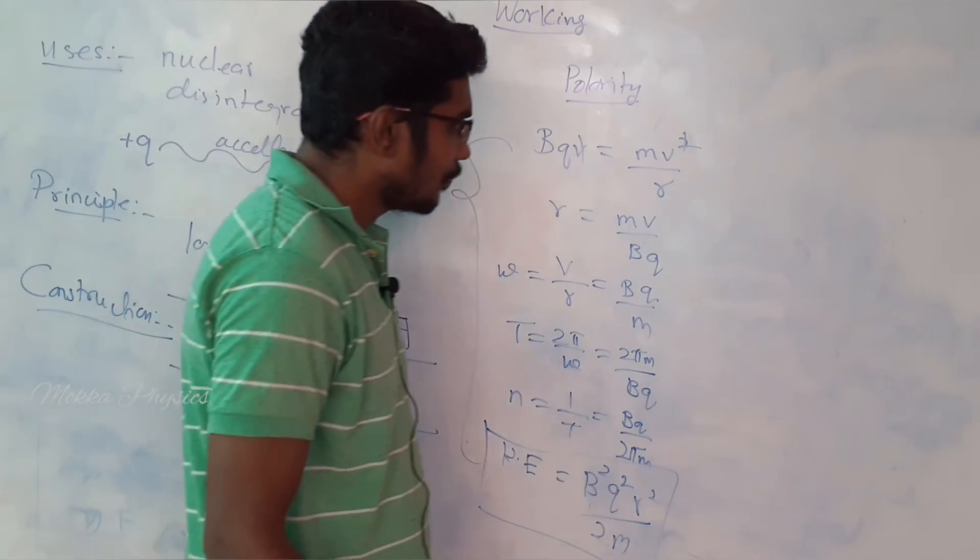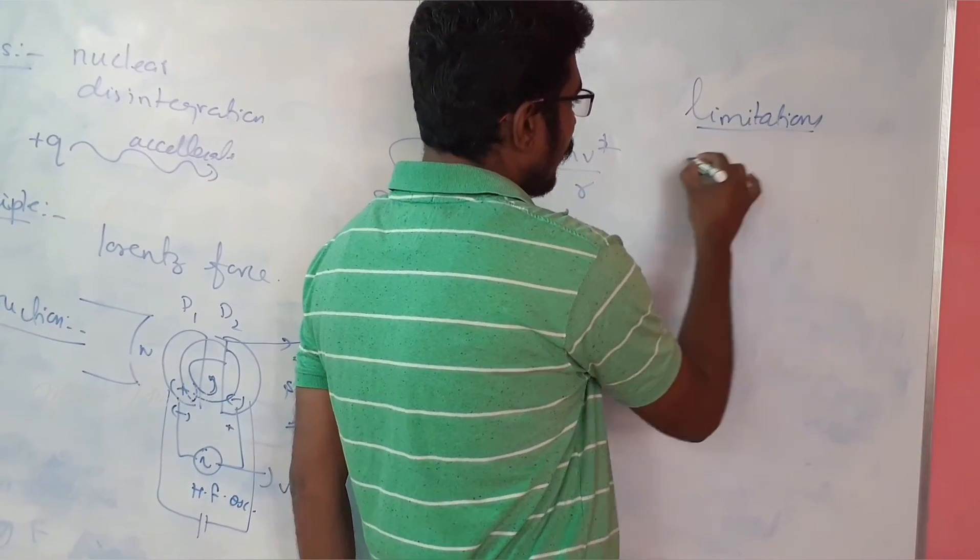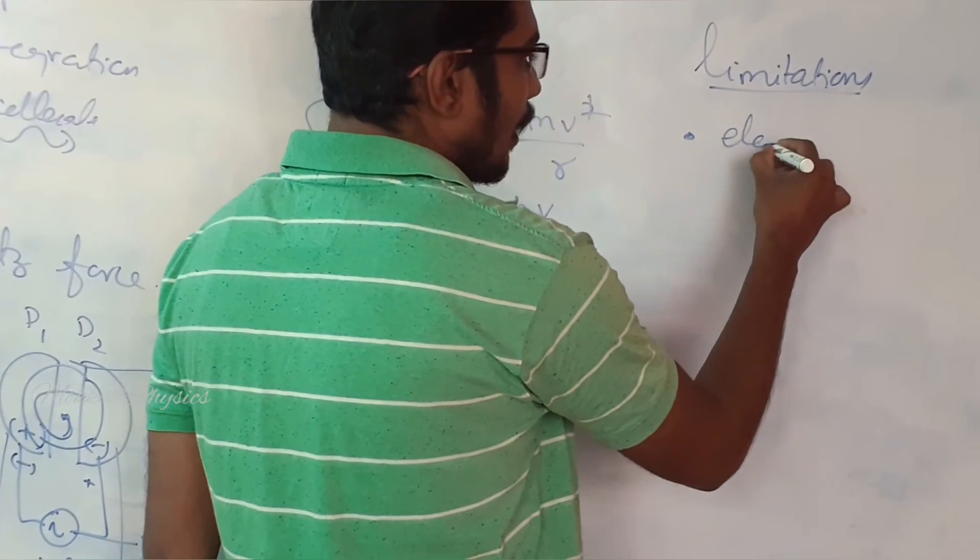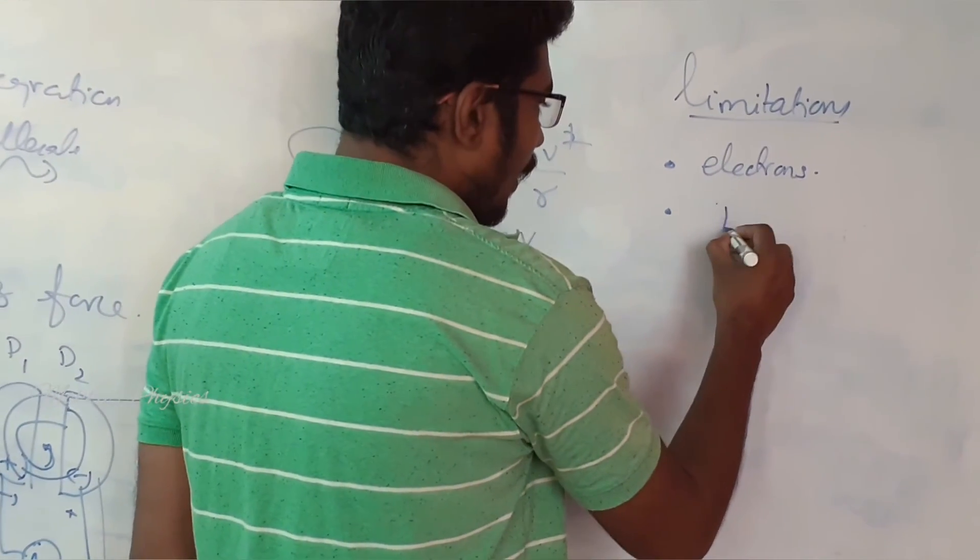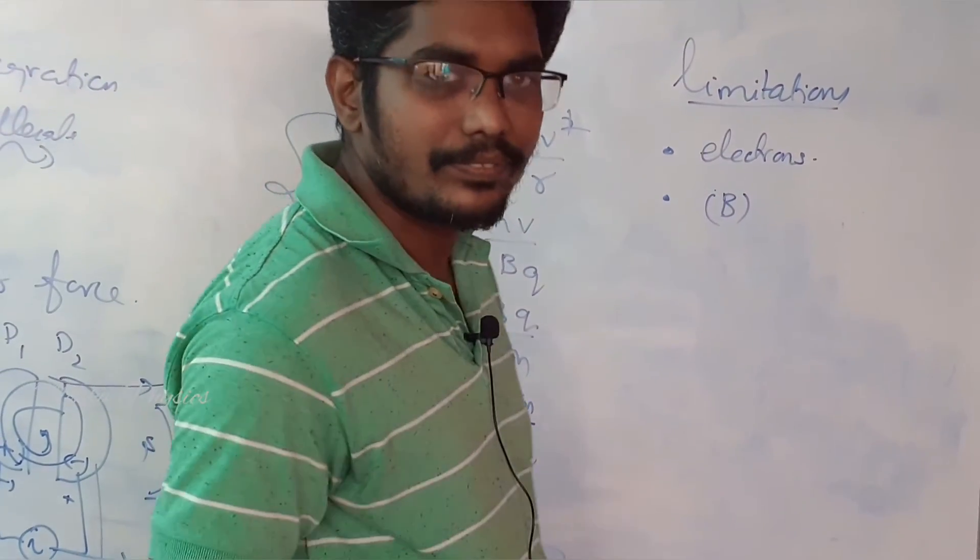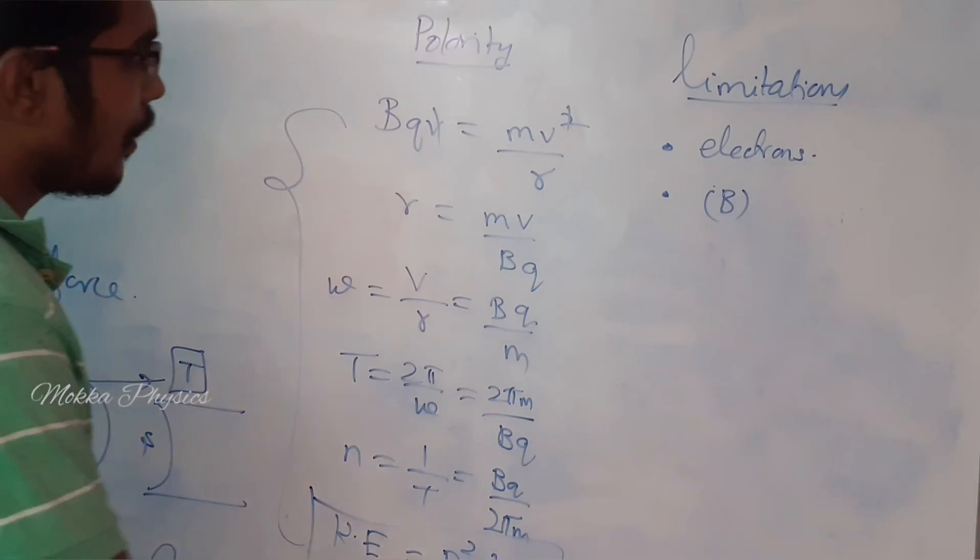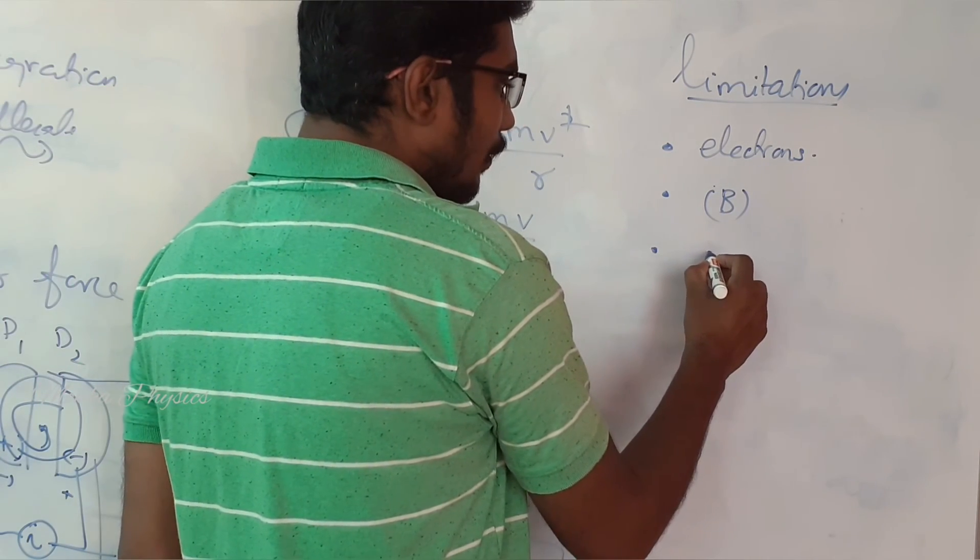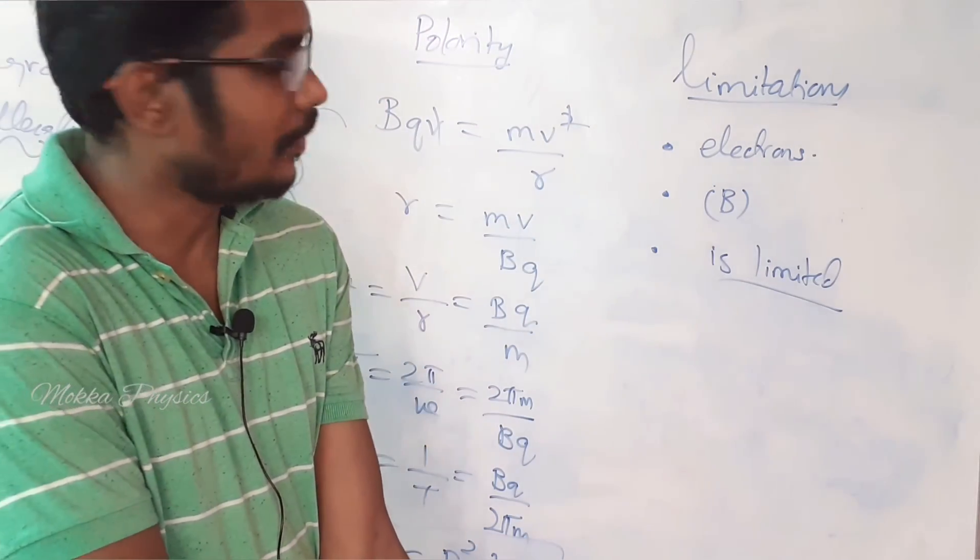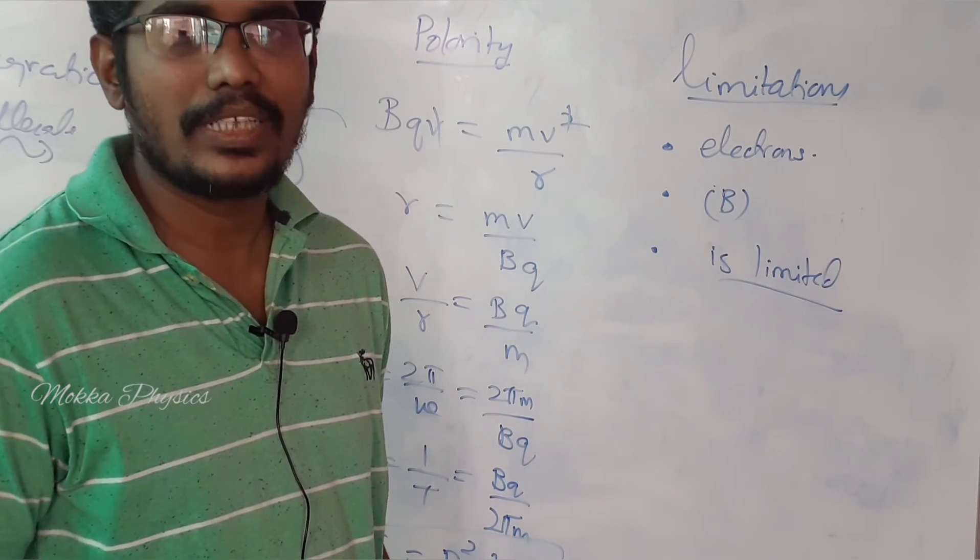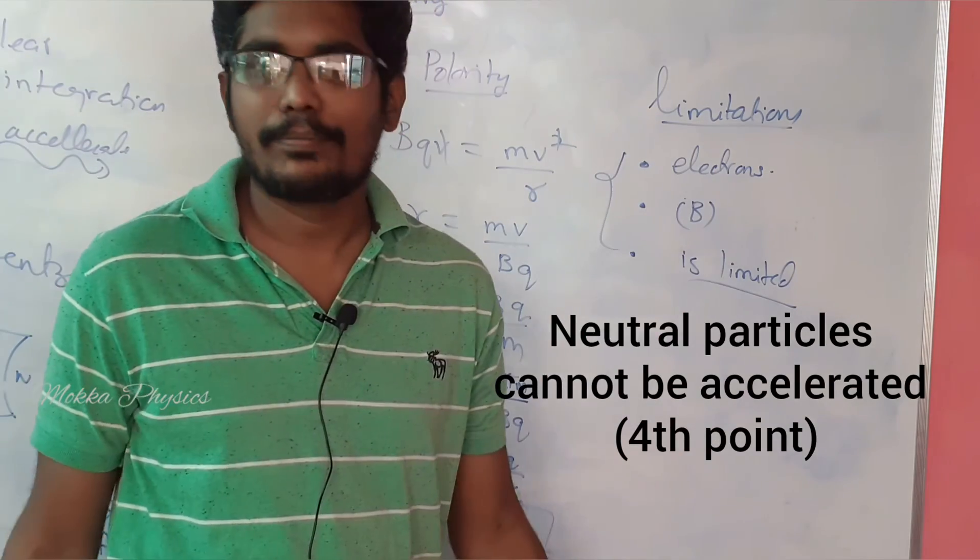At the same time, there are limitations. You can learn this. There are two markers too. First, limitations. Negative charge particles will accelerate this. Electrons cannot be accelerated. Second point, maintaining the magnetic field is little bit difficult. Throughout the system, a uniform field is established. This is custom. The speed of the velocity is limited. The velocity of the particle is limited. That is speed in solid time. It is a huge velocity. It is limited value. It is all limitations. You can learn this. Right?